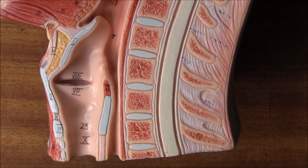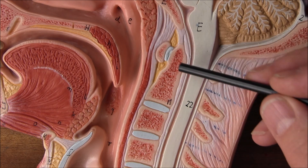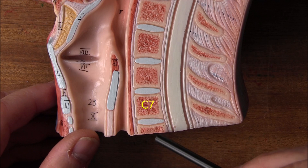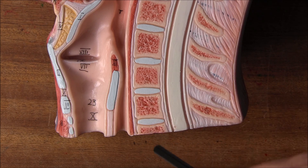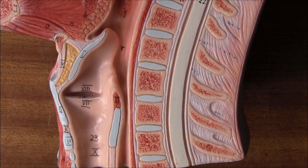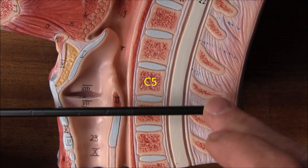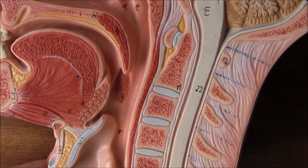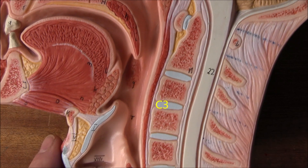This model allows us to equate anatomical structures with vertebral levels. In adults the larynx is level with C5 and C6. But because the neck is much shorter in children, the larynx is more at the level of C2 and C3, making the neck very much shorter in children.